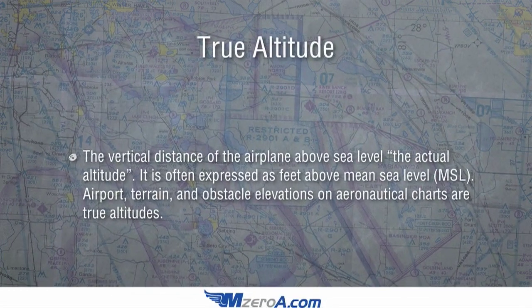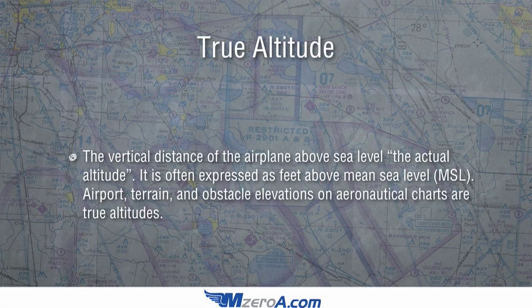This one's really interesting — true altitude. True altitude is the vertical distance of the airplane above sea level. It is known as the actual altitude. It's often expressed as feet above mean sea level, MSL. Things like airport, terrain, and obstacle elevations on aeronautical charts like your sectional or your TAC are all true altitudes. True altitudes are what's shown on your sectional chart.